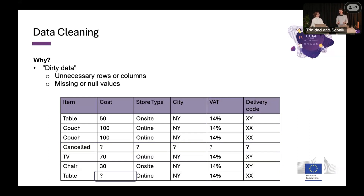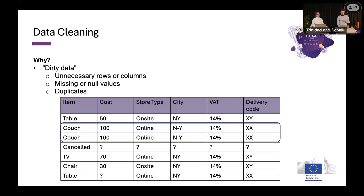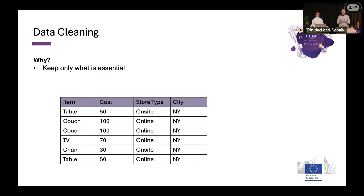Another reason to clean data is duplicates. If we have the same item — say 'couch' — appearing twice with exactly the same entry, we don't need both, as it would affect the accuracy of things like averages. So these are all reasons why you need to go and clean your data. In the end, when you clean it up, you keep what is essential — a nice, neat table with only what matters — so that you can move to the next step.